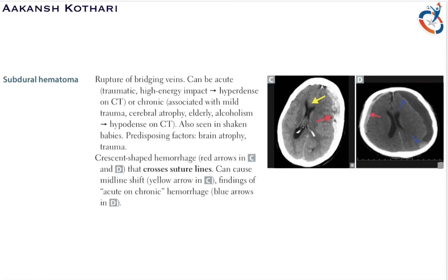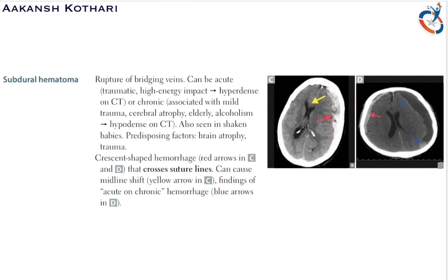Predisposing factors for subdural hematoma include brain atrophy and trauma. The classic presentation on CT is a crescent-shaped hemorrhage, unlike the biconvex shape of epidural hematoma. These crescent-shaped hemorrhages cross the suture lines and can cause a midline shift, leading to various complications.